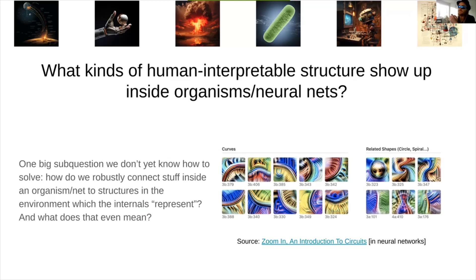For nerd sniping purposes, here's one big sub-question that we don't have a very good way to handle yet. That is, how do we robustly connect stuff inside of an organism or a neural net to the structures in the environment which that stuff represents? Or, what does it even mean for some structures inside of a system to represent something out in the environment? We don't really have a good way of mathematically modeling that at this point. That's a cool problem.